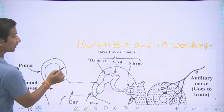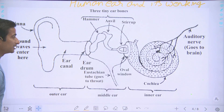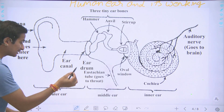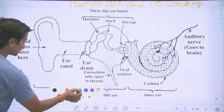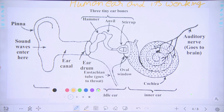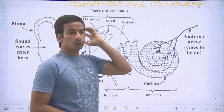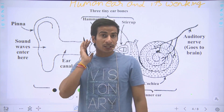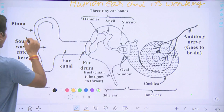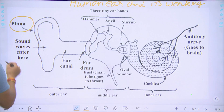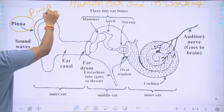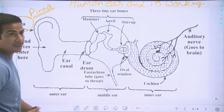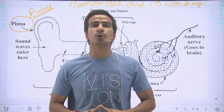So this is the Human Ear — this is the diagram of the Human Ear. Let's start from the outer portion first. The outer section that we can see outside is basically called the pinna. Pinna is the outer section, and its work is that it collects the sound waves.